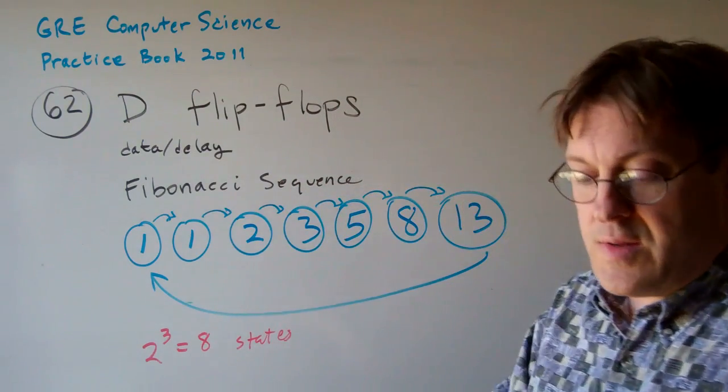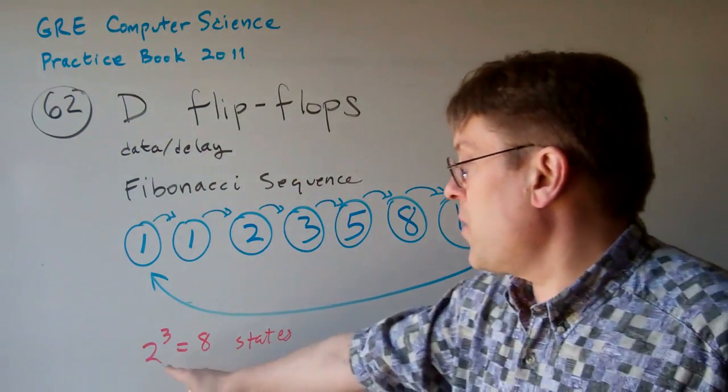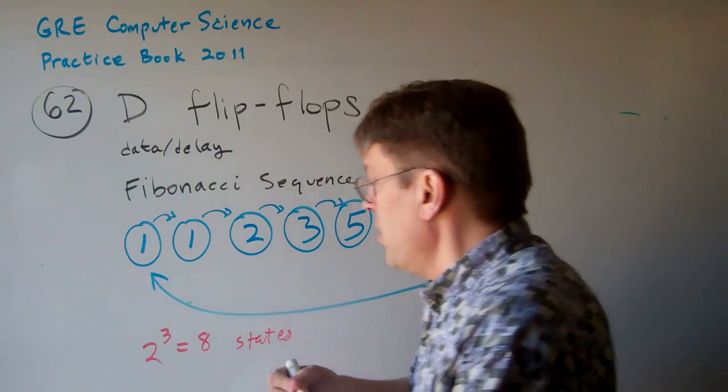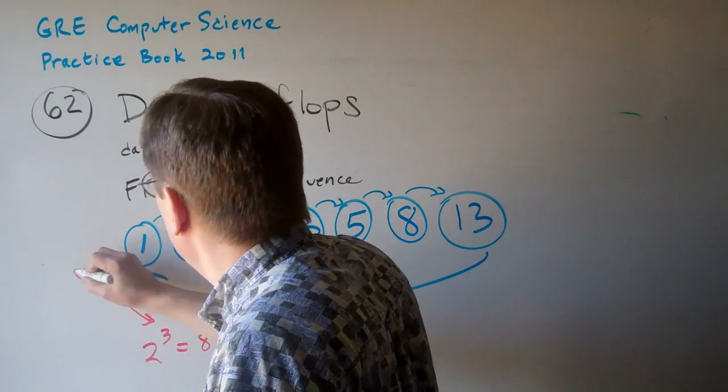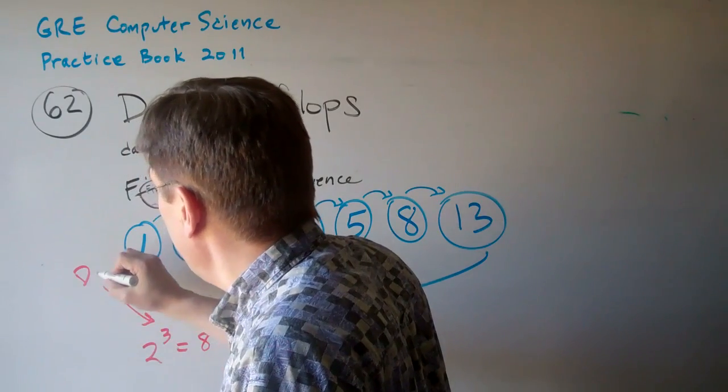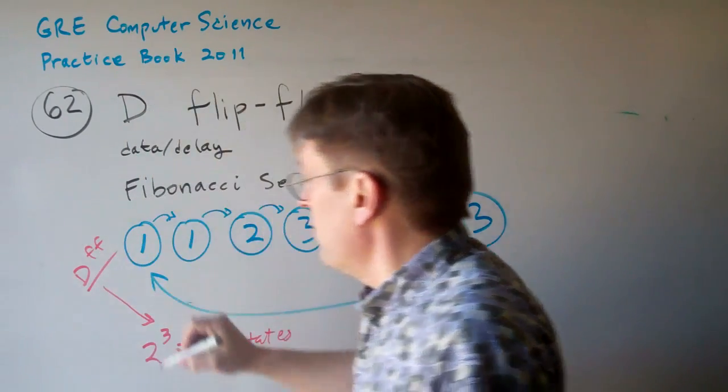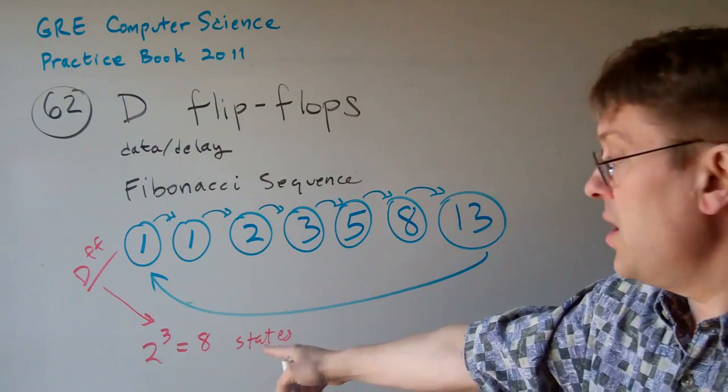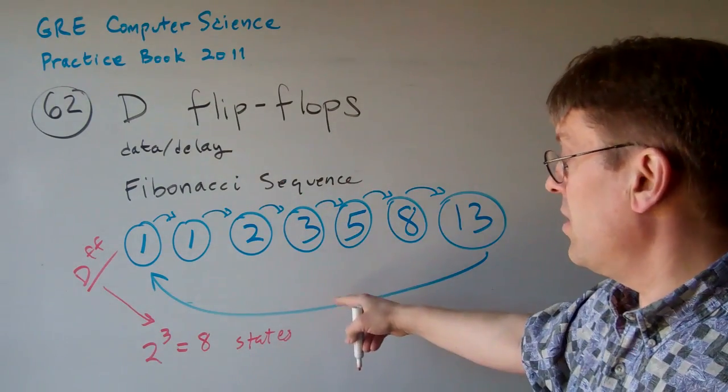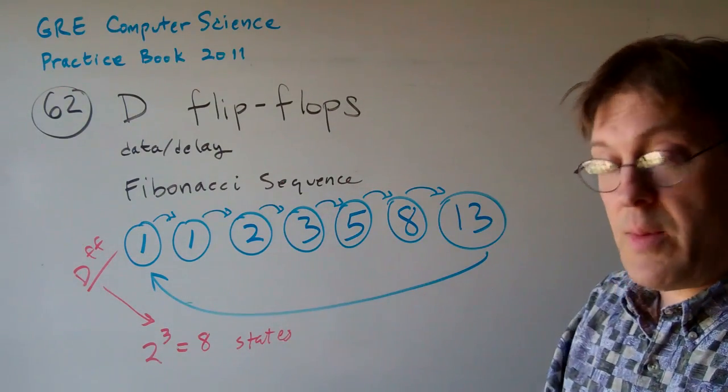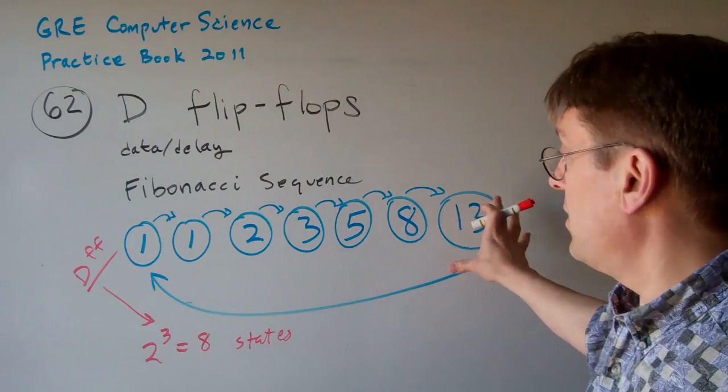We really only need 7 states, but we're going to need at least 3 of these D flip-flops in order to achieve the state table for this particular state diagram.